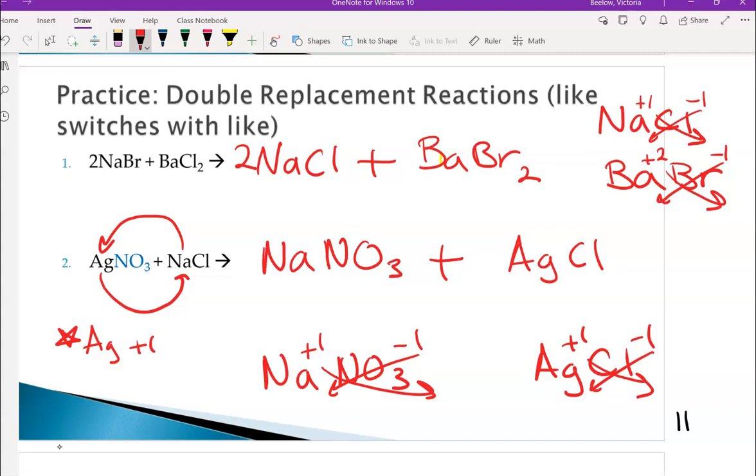And this one's pretty easy. It is already balanced because we have one of each element on either side. 1 Ag, 1 Ag. There's 1 NO3, 1 NO3, which is nitrate. 1 Na, 1 Na, which is sodium. 1 Cl, 1 Cl, which is chlorine.